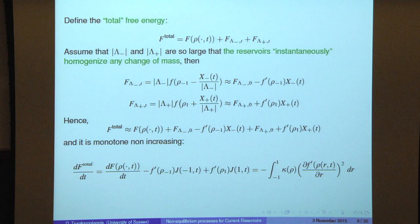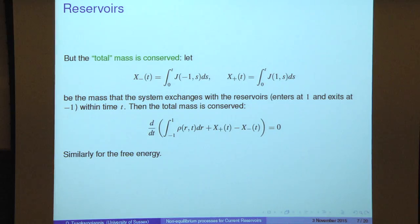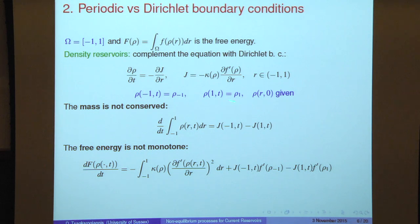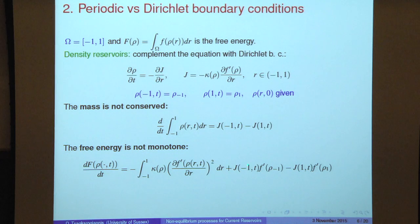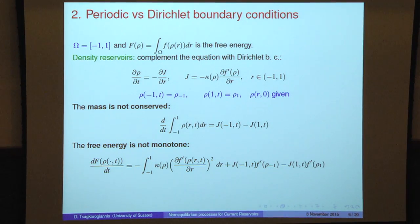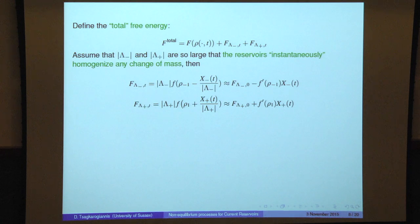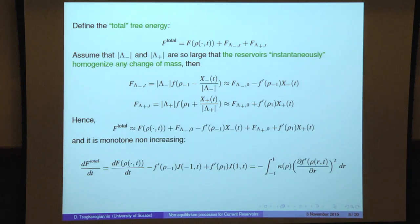The change in total free energy — interior plus boundary — gives exactly the terms I was missing before in order to have dissipation throughout the whole system. When I include the free energy of the interior plus the left and right reservoirs, the extra terms cancel exactly what appeared from integration by parts. I'm left with the quadratic part with a minus sign, so the total free energy is indeed dissipating.